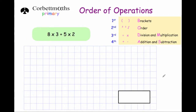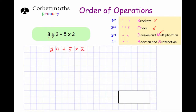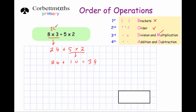Our last question is 8 times 3 plus 5 times 2 — it's a bit more complicated with three things to do. There are no brackets or squares, but we do have two multiplications, so we work those out first. 8 times 3 is 24, giving us 24 plus 5 times 2. Then 5 times 2 is 10, leaving us with 24 plus 10. Finally we do the addition: 24 plus 10 is equal to 34. So you do the multiplications first — 8 times 3 is 24, 5 times 2 is 10 — then the addition last: 24 plus 10 is 34.